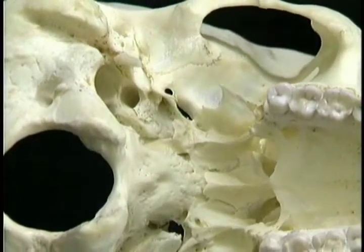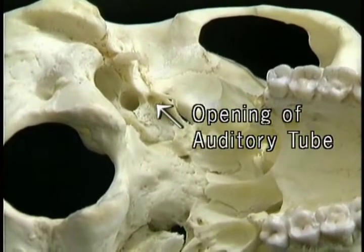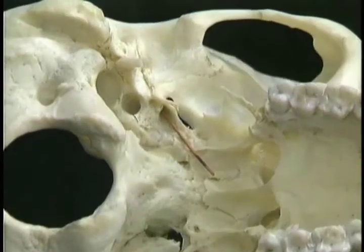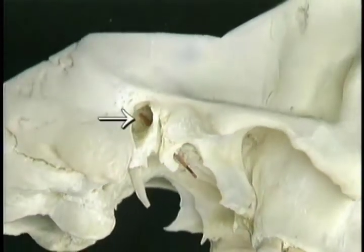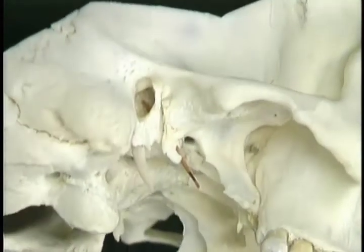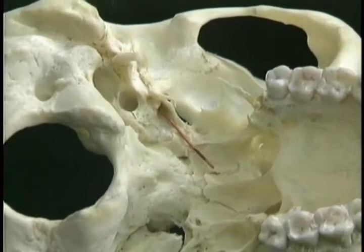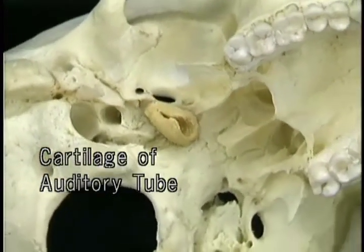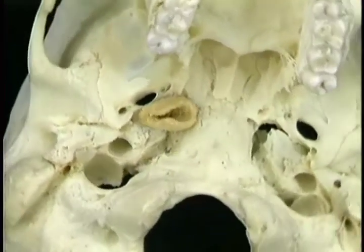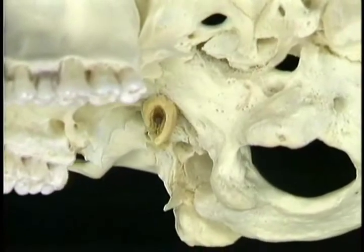In front of the opening for the carotid canal, there's one further opening: the opening for the auditory tube, also called the eustachian tube. The auditory tube passes backwards and laterally to emerge in the middle ear. Medially, it is prolonged by a tube of cartilage. The auditory tube opens into the nasopharynx, as we'll see.